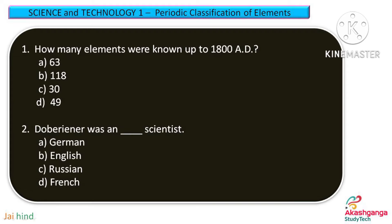Question 1. How many elements were known up to 1800 AD? Option A: 63, Option B: 118, Option C: 30, and Option D: 49.